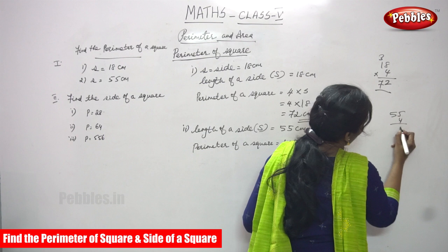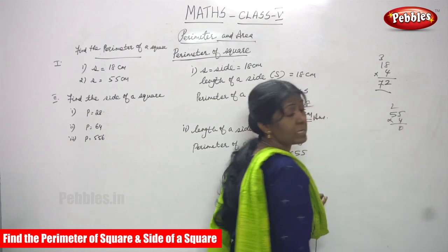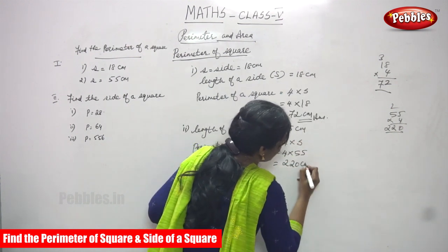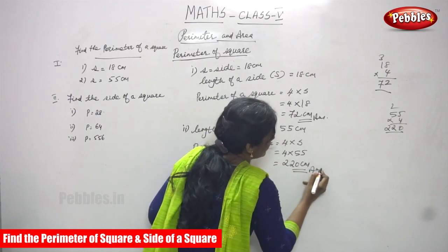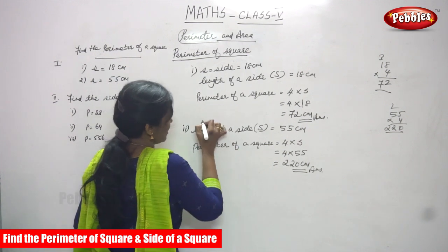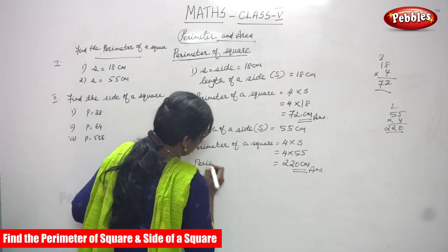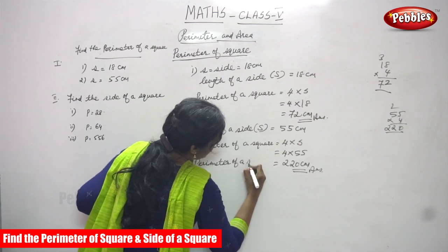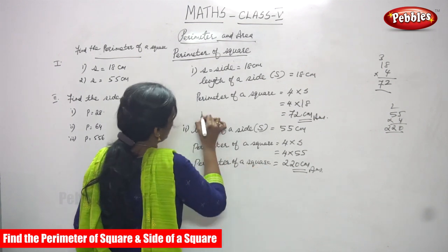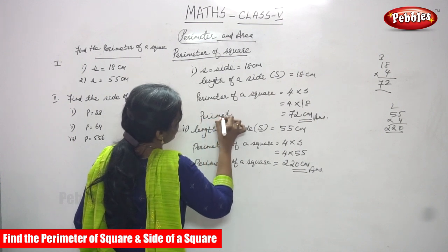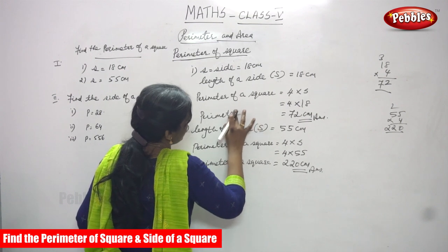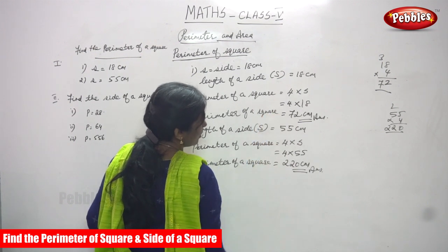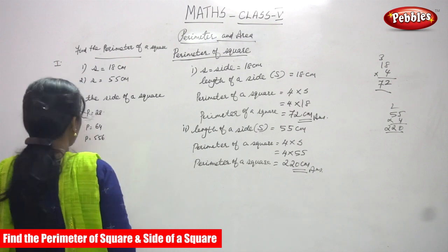55 into 4. 5 fours are 20, carry 2. 5 fours are 20, plus 2 is 22. The answer is 220 cm. This is the right answer for the question. In the last step, you have to write the same: perimeter of the square is 220 cm. And the first subdivision is over because two sums are done.